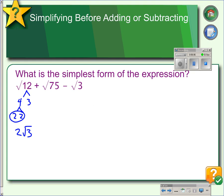75 can be factored as 3 times 25. 25 is a perfect square. The square root of 25 is 5. So, we have 5 root 3. And then, the square root of 3 here can't be simplified. Once we've simplified the square root 12 and the square root 75, we can see we now have matching radicals. So, we can combine the coefficients. 2 plus 5 is 7. Minus 1 is 6. So, that would be 6 root 3.